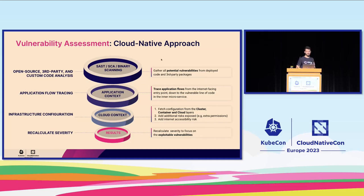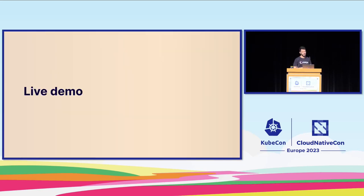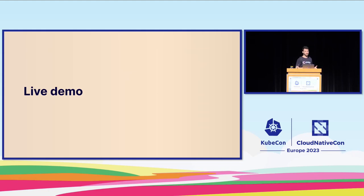This is a high-level overview of the security funnel we've built. Now that we understand the main challenges of finding vulnerabilities in cloud-native and Kubernetes-based applications, what observability and OpenTelemetry are, and how to correlate them together — between observability and AppSec — we can see a live demo of a cloud-native environment with vulnerabilities and see how OpenTelemetry helps us understand their real risk.